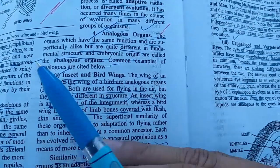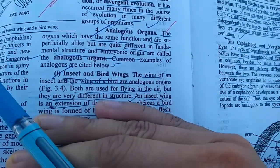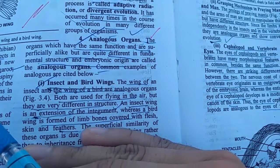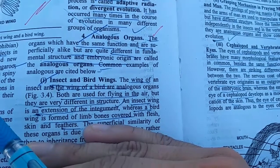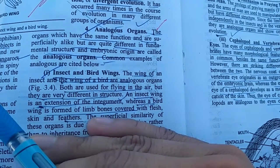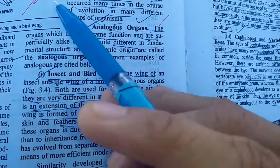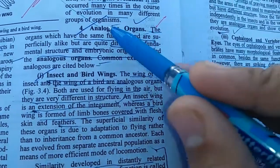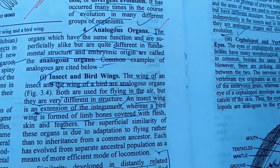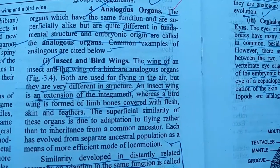With regard to the topic of evidences of evolution, this video is related to the analogous organ. Previously I discussed the homologous organ with examples. So next I have a new helpful video about the analogous organ. Analogous organs have the same function but they have different embryonic origins.